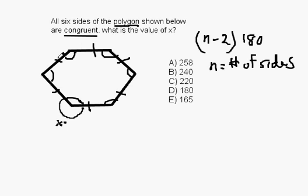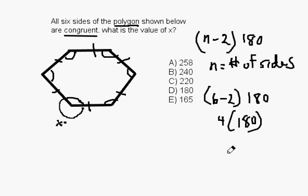So n, in this case, is 6. So 6 minus 2 times 180, 4 times 180, which is 720.